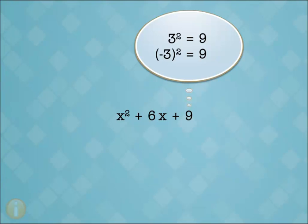Next, we check the coefficient of the middle term. Is it 2 times 3 or minus 3? Yes, it's 2 times 3. So the trinomial meets the second test. It's a perfect square.